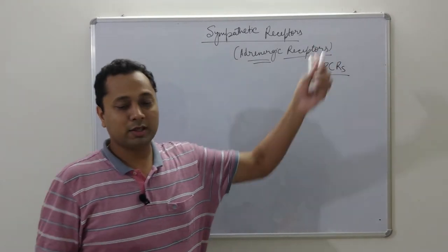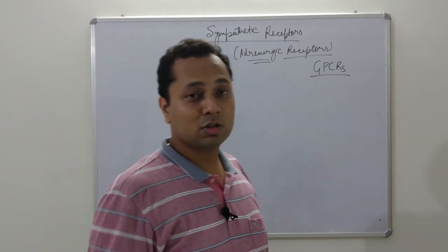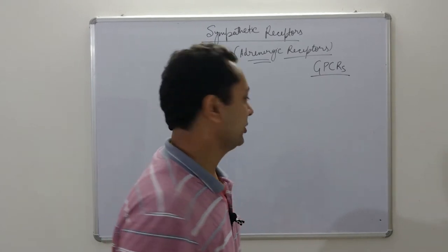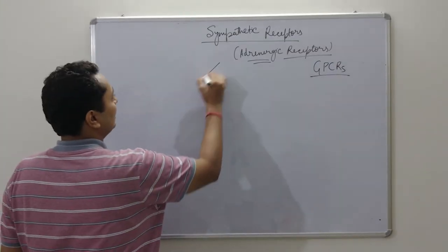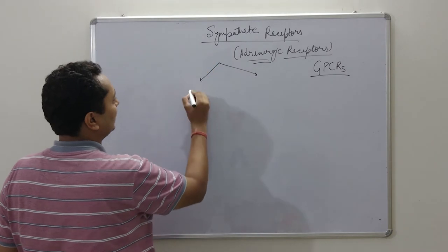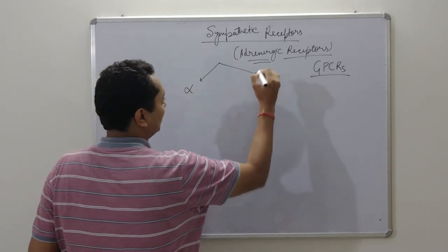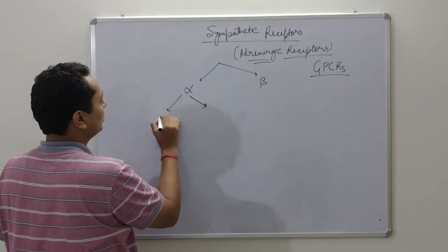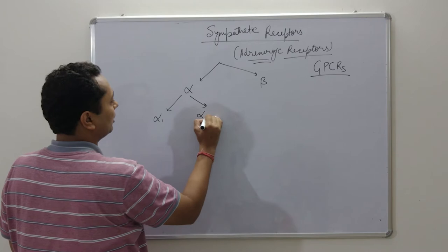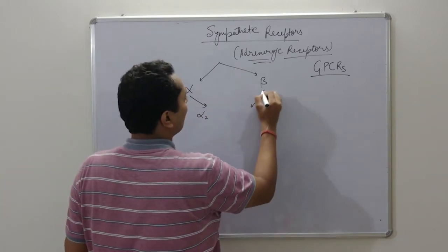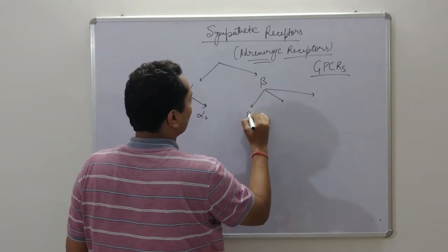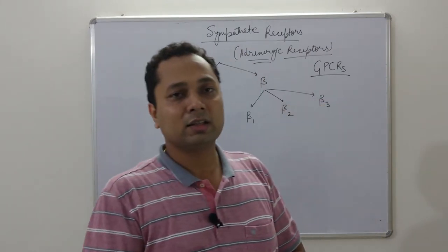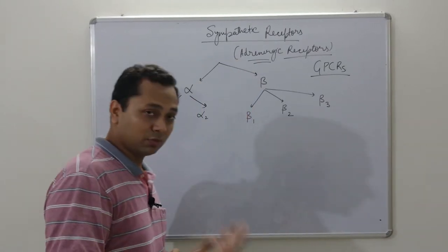I'm providing a link if you want to see how G protein-coupled receptors work and their complete physiology. Adrenergic receptors are classified into two categories: first is alpha and second is beta. Alpha are further categorized into two subtypes — alpha-1 and alpha-2 — while beta are characterized into three subtypes: beta-1, beta-2, and beta-3.